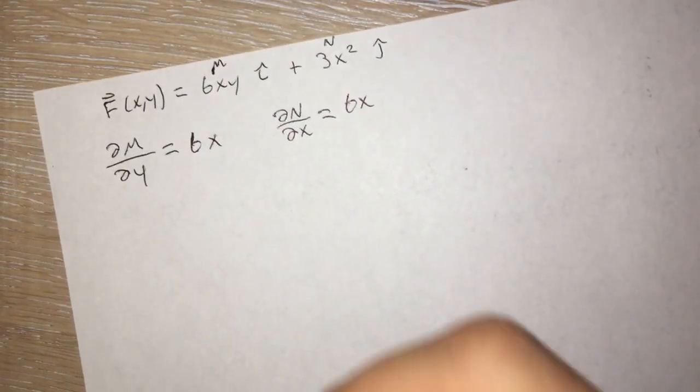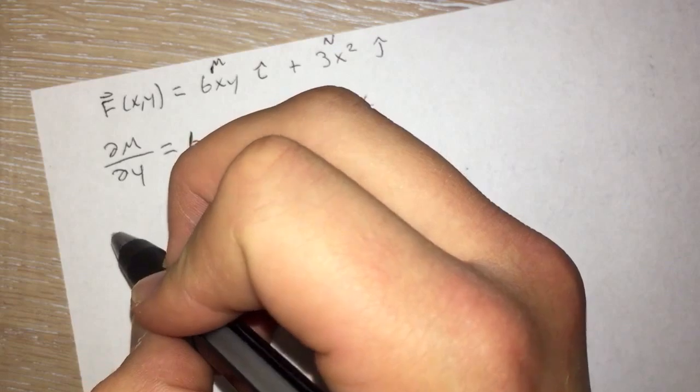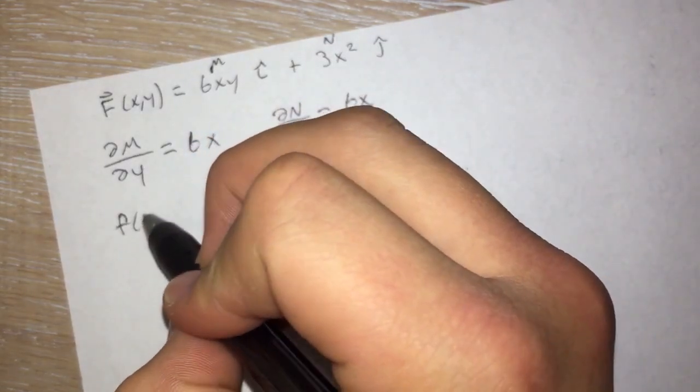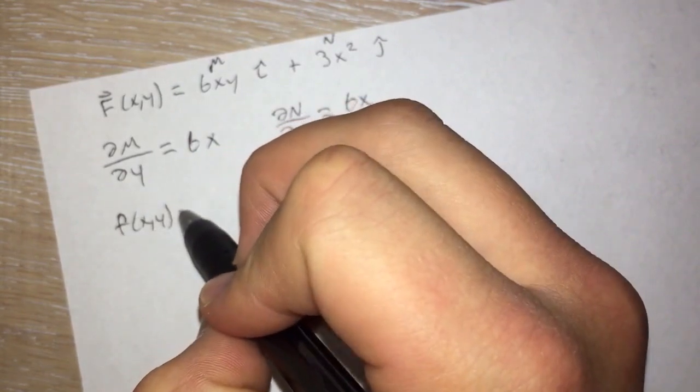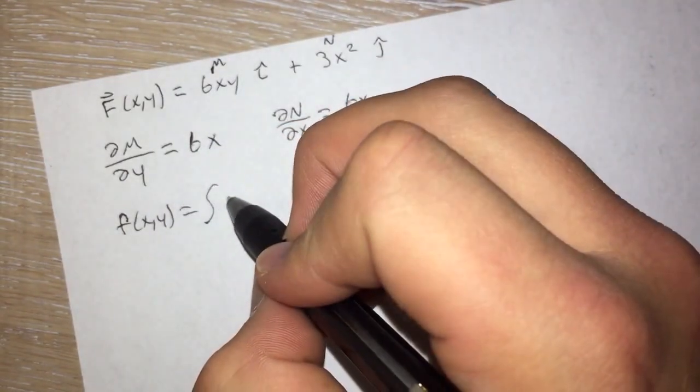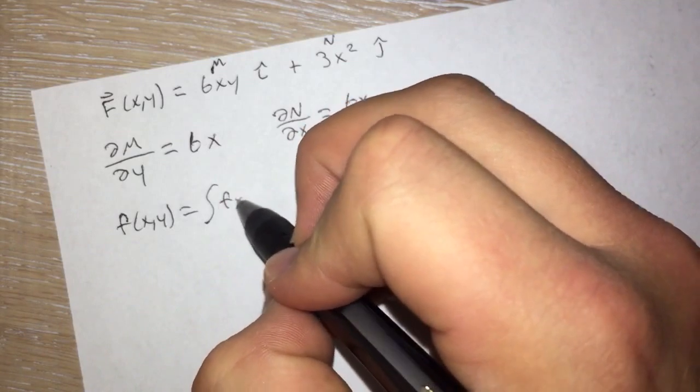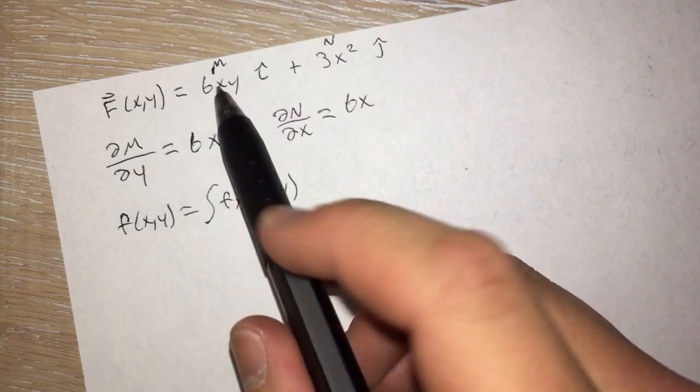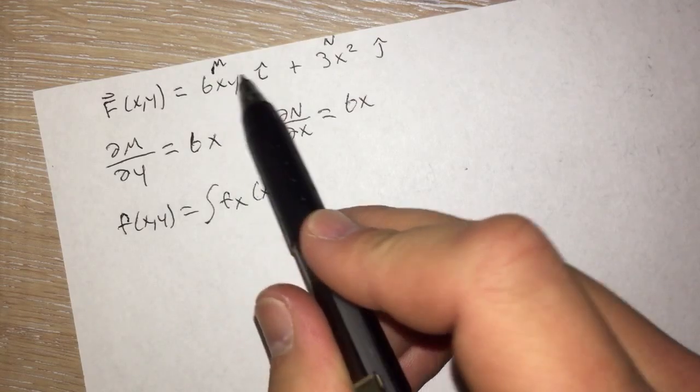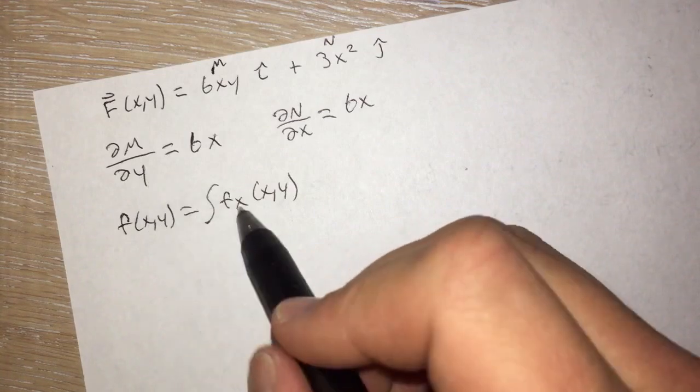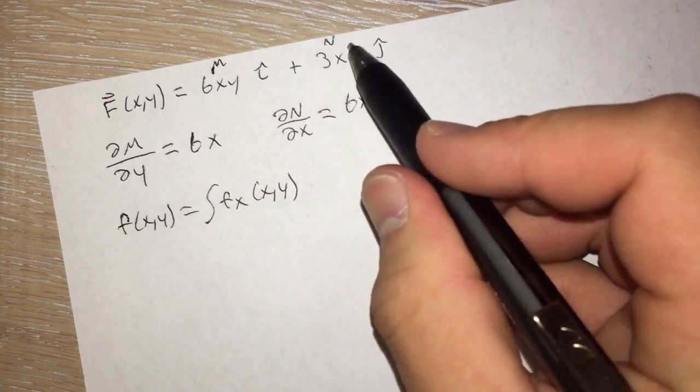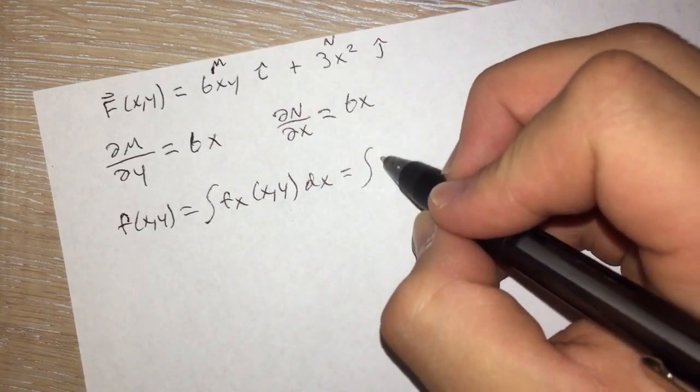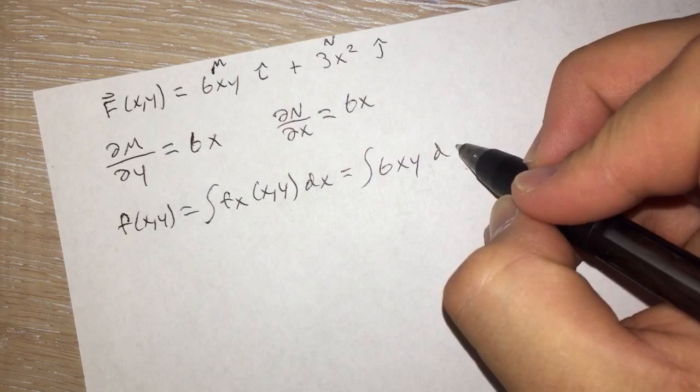So now we are going to find the two segments that go together to make our potential function. In order to do that we find f of xy which is equal to the integral of f of x of xy, which if you remember is this first portion, your m before you take the partial derivative. And then your f of y of xy will be this portion. So this is dx which then we will get the integral of 6xy dx.